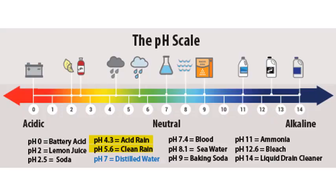Measuring acid rain: a diagram shows where various substances fall on the pH scale. Acidity and alkalinity are measured using a pH scale for which 7.0 is neutral. The lower a substance's pH (less than 7), the more acidic it is; the higher a substance's pH (greater than 7), the more alkaline it is. Normal rain has a pH of about 5.6 — it is slightly acidic because carbon dioxide (CO2) dissolves into it, forming weak carbonic acid. Acid rain usually has a pH between 4.2 and 4.4.